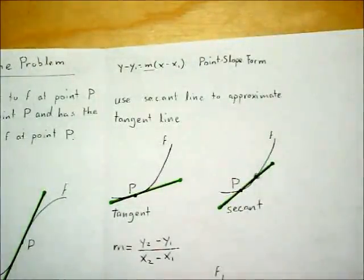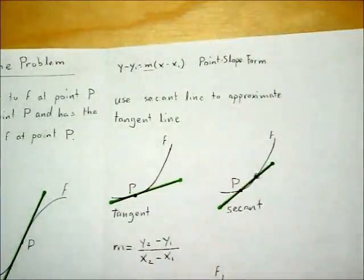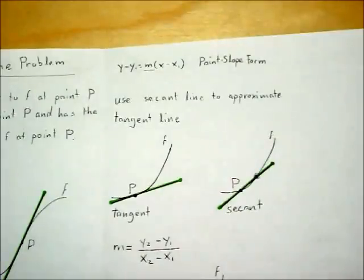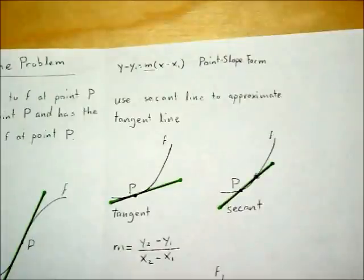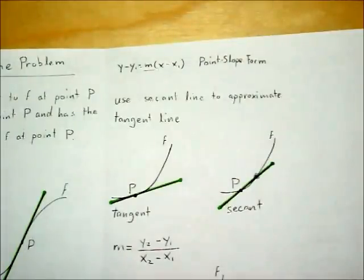What we'll do for now is approximate the tangent line using a secant line instead. We'll have the secant line pass through the point of tangency, point p, and a second point on the function f. This way, having two points, we can use the slope formula to find the secant line's slope.